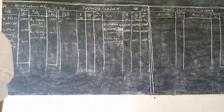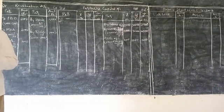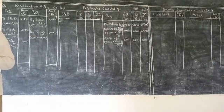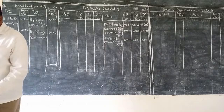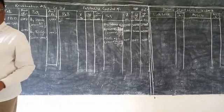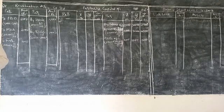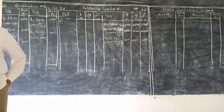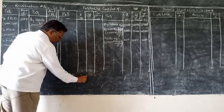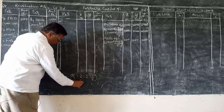Goodwill to the extent of retiring partner share is created at 15,000. So create goodwill valued at 15,000. Need to find gained ratio. Old ratio is 2:2:1. Z retires, new ratio is 2:2. Gained ratio is 2:2 or 1:1.